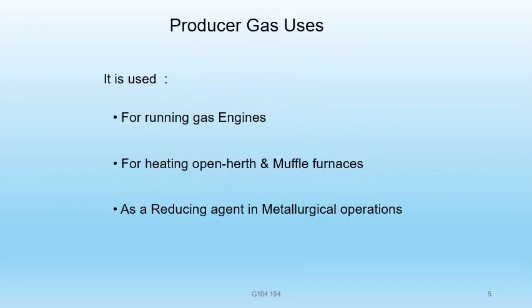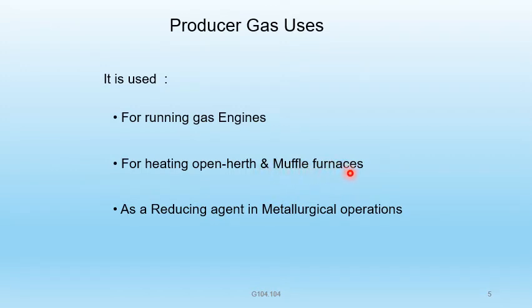Uses of producer gas: it is used for running gas engines, for heating open-hearth muffled furnaces, as a reducing agent in metallurgical operations, as fuel in the steel and glass industry, and in the manufacture of ammonia.